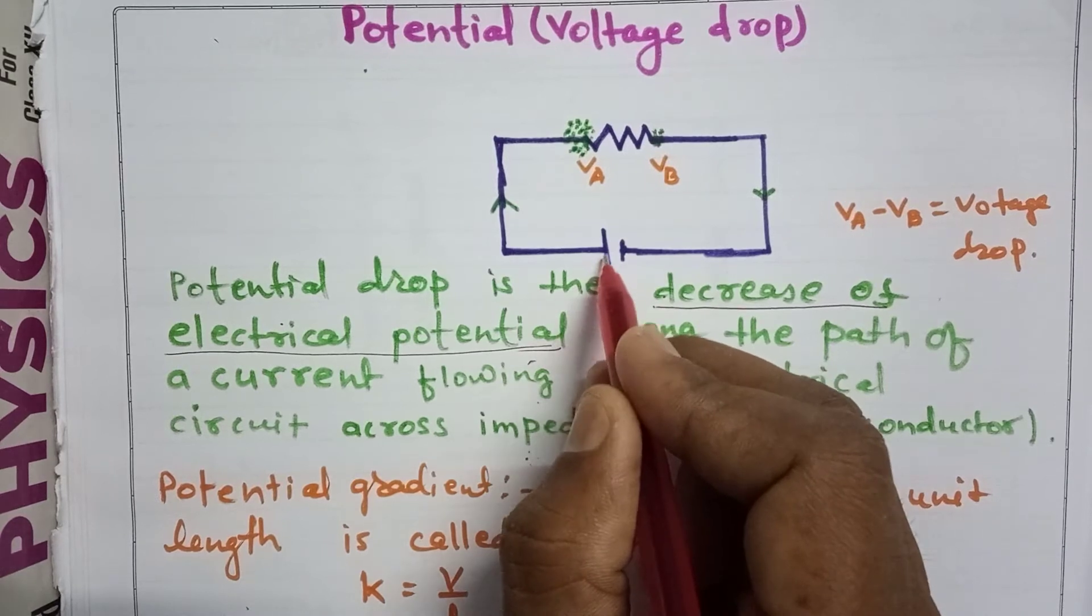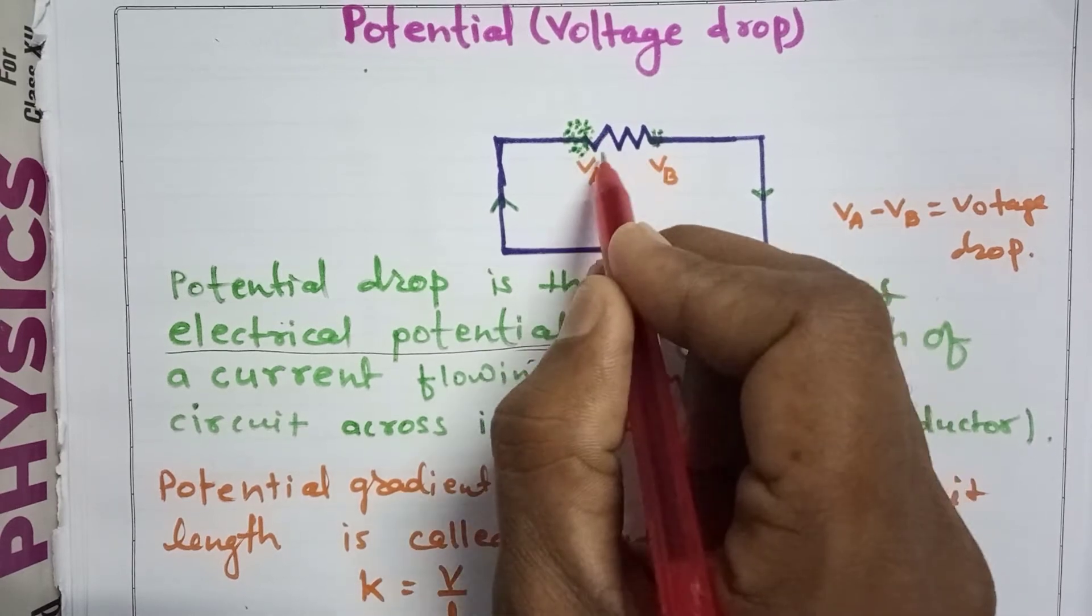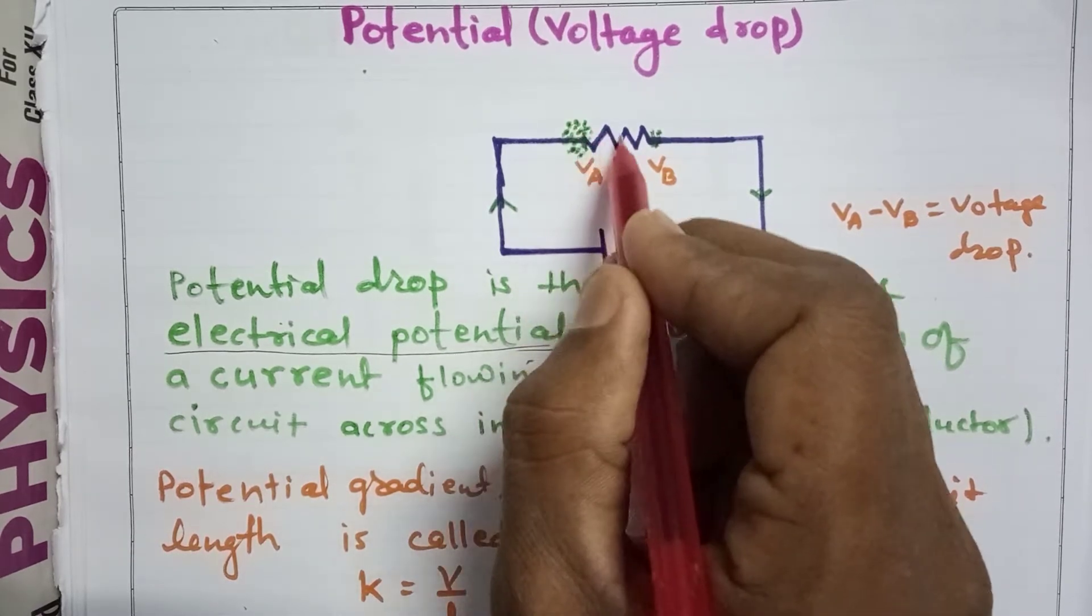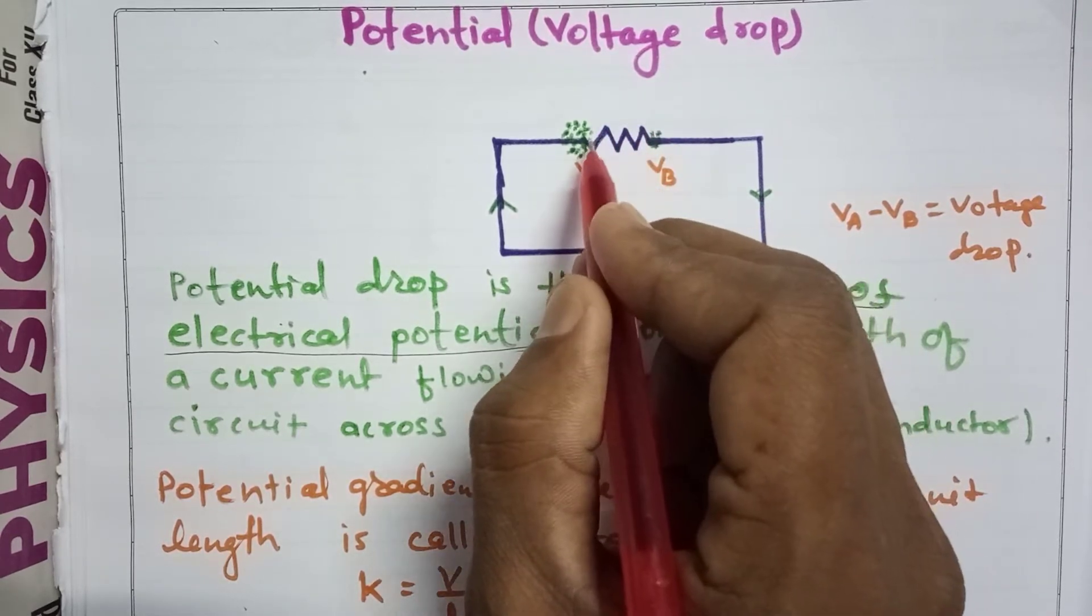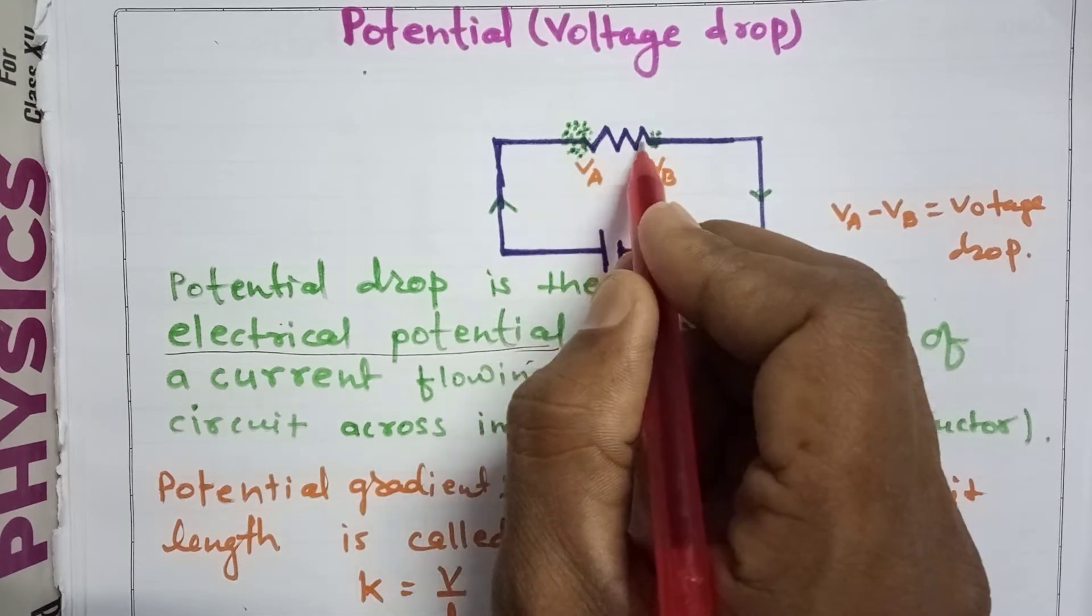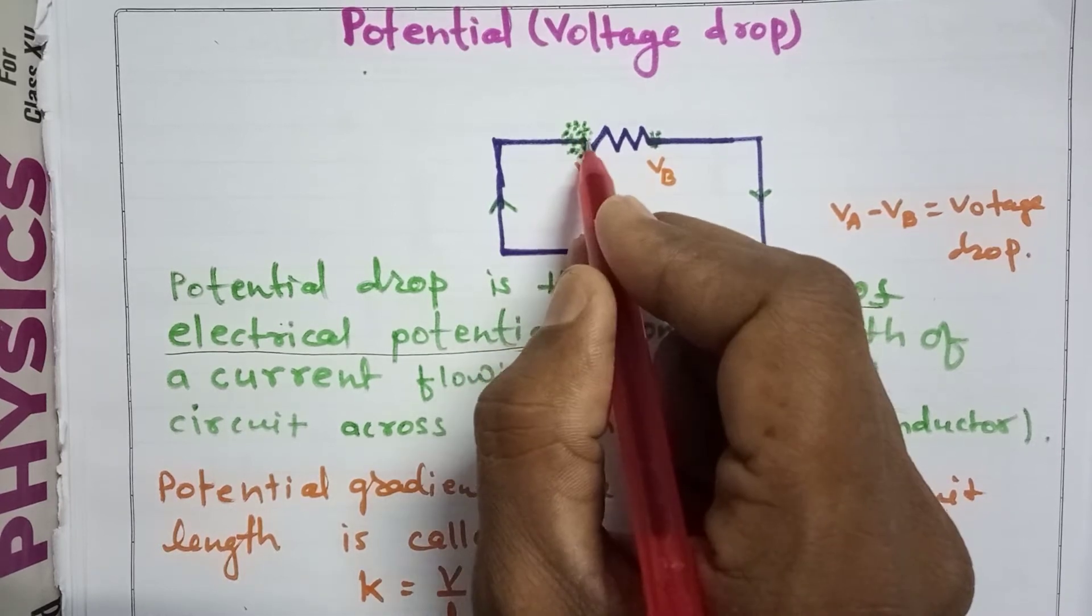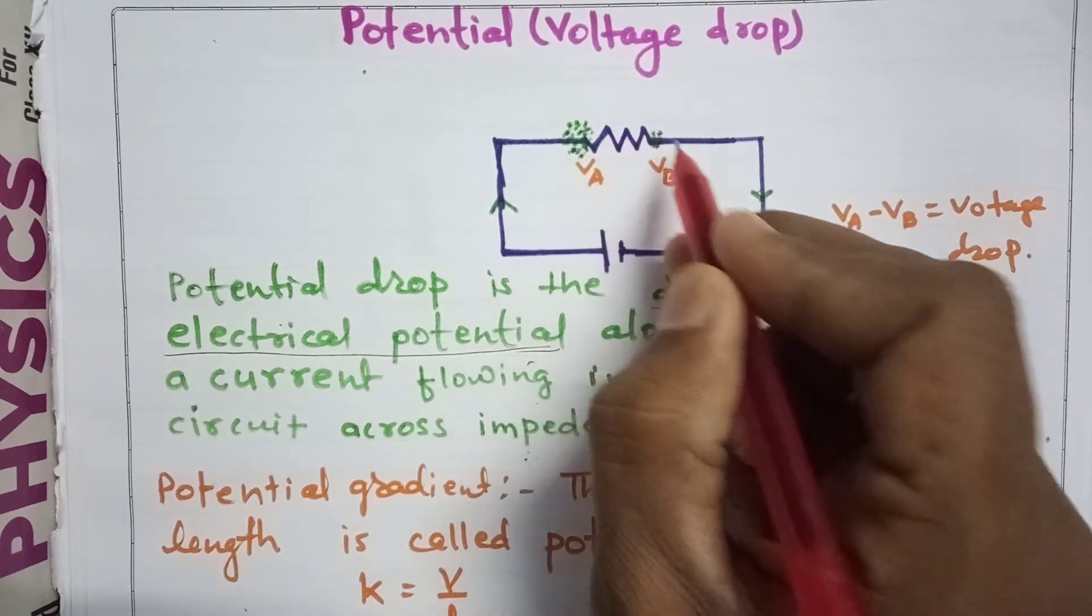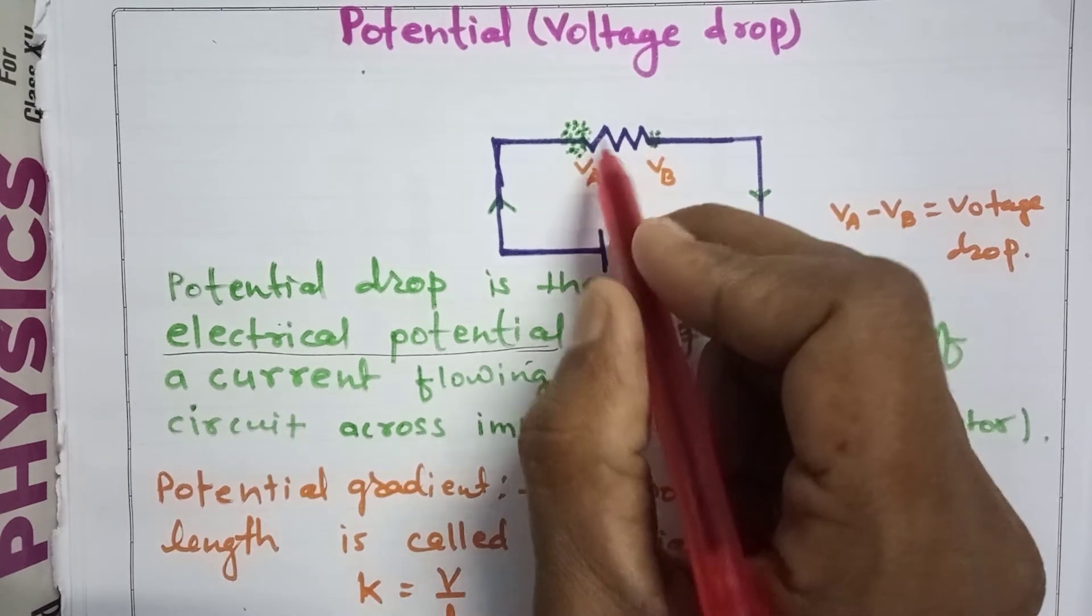Before passing through this resistor, the charges start to accumulate here. They cannot cross the resistor easily due to the resistance, so they will accumulate at this point before crossing through the resistor.